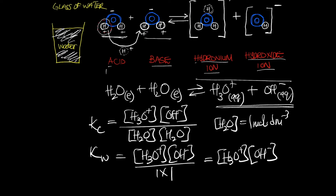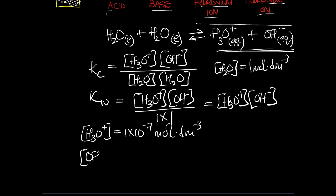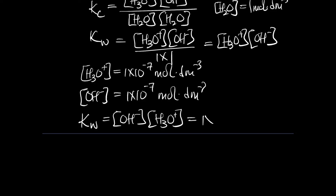The value of each concentration: the concentration of hydronium ion equals 1×10⁻⁷ mol per dm³, and equally the concentration of hydroxide ion is also 1×10⁻⁷ mol per dm³. Therefore, Kw — the product of the concentration of hydroxide ion multiplied by the concentration of hydronium ion — is equal to 1×10⁻¹⁴ mol per dm³. That is the auto-ionization of water in a nutshell.